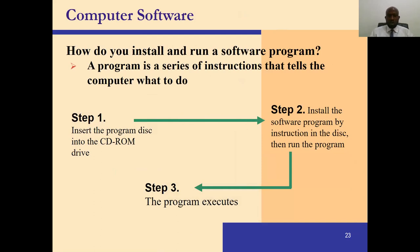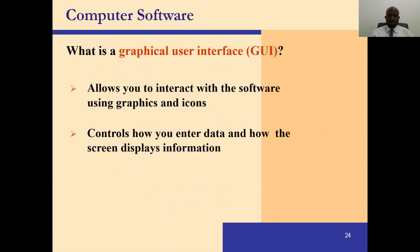A computer program or software is a series of instructions that tells the computer what to do. To install a program from a pen drive or CD, insert it into the CD-ROM drive, then install the software following the instructions on the disk, and then run the program. A GUI — Graphical User Interface — allows you to interact with the software using graphics and icons, and controls how you enter data and how the screen displays information.